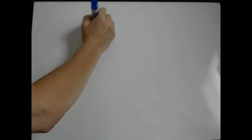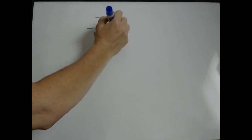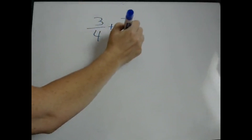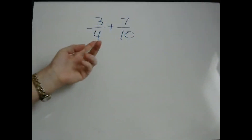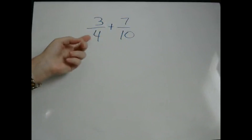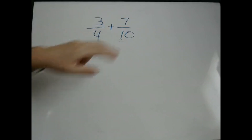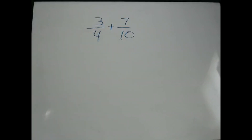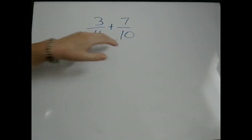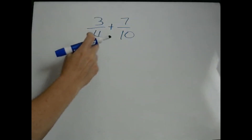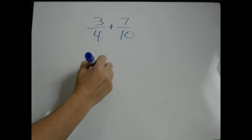For example, if we have 3 fourths plus 7 tenths. The key to this is you have to make the denominator — which is the bottom number in the fraction — the same in order to add. You need to find a number that both of these can multiply into. The simplest way to do that is simply to multiply them together. So you just do 4 times 10, which is 40.